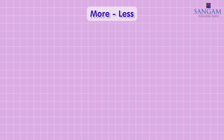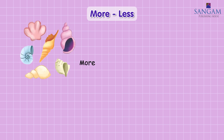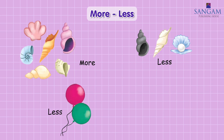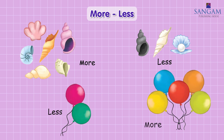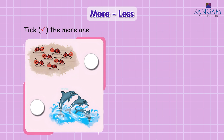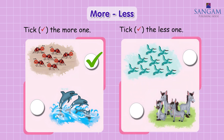More, less. We have more shells. Less shells. Less balloons. More balloons. Tick the more one. More ants. Less fish. Tick the more ants. Tick the less one.